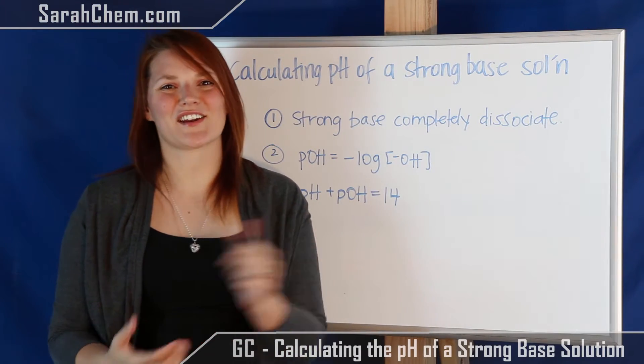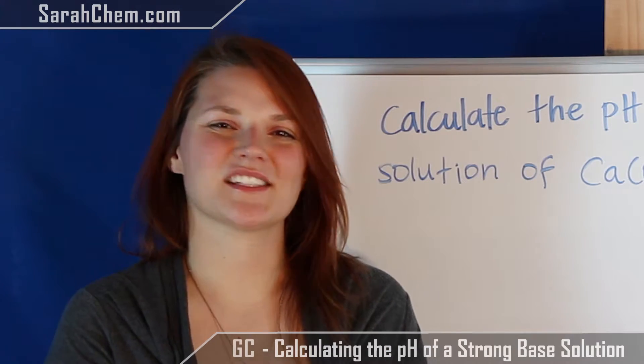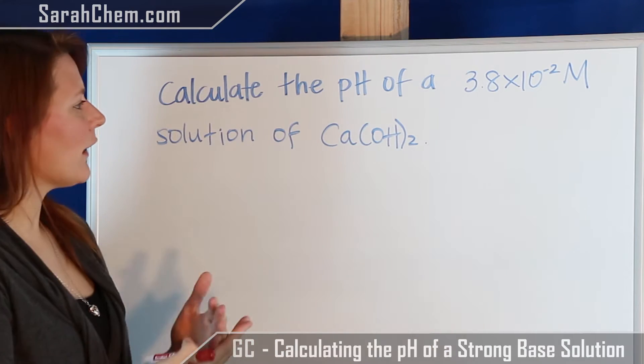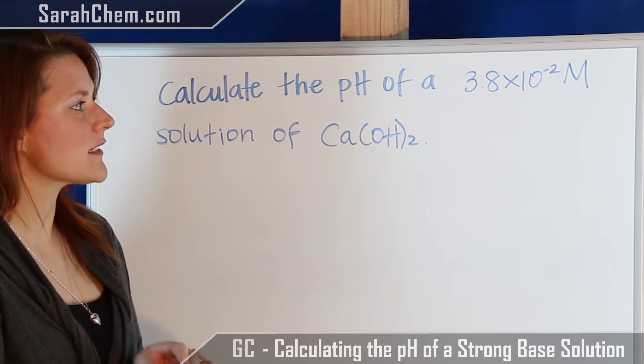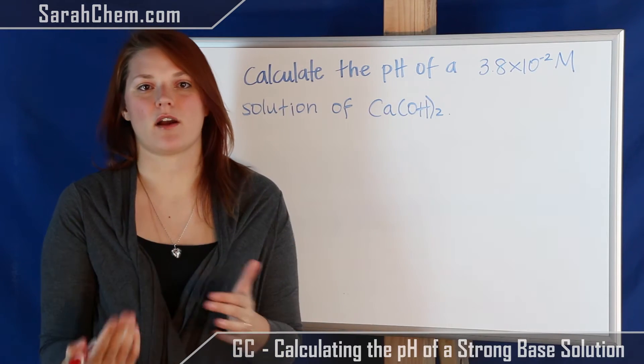So now that we know these three things, let's look at our example. Okay, so let's take a look at this question. It says, calculate the pH of a 3.8 times 10 to the minus 2 molar solution of calcium hydroxide.